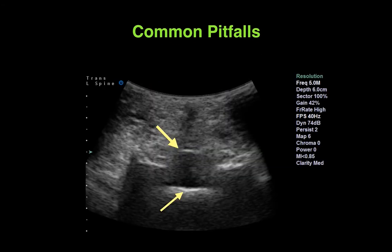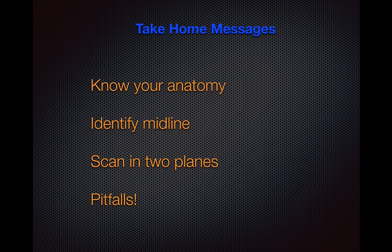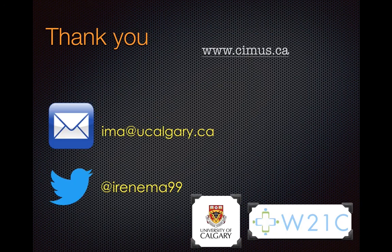The second common pitfall is not recognizing where the dura is. Having said that, I wouldn't generally rely on the depth estimate as absolute anyway — it really just gives you guidance, and you shouldn't take it as an absolute estimate. Take-home messages: really know your anatomy. Ultrasound is most helpful in figuring out where the midline of your patient is. Do all your scans in two planes, be very cautious in interpreting the images, and be aware of these pitfalls.